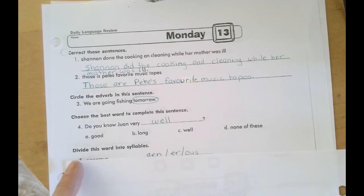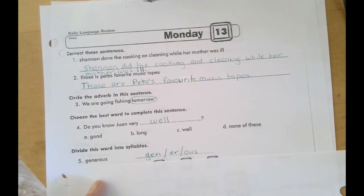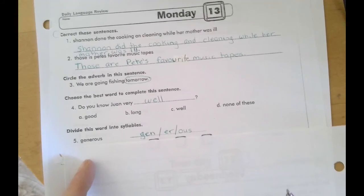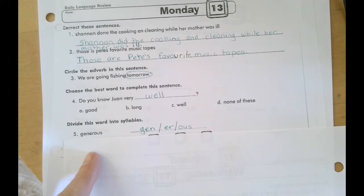And number five, you would separate generous into syllables. Gen, er, us. So sounded vowel E, sounded vowel E, gen, er, O-U-S is your last syllable there.